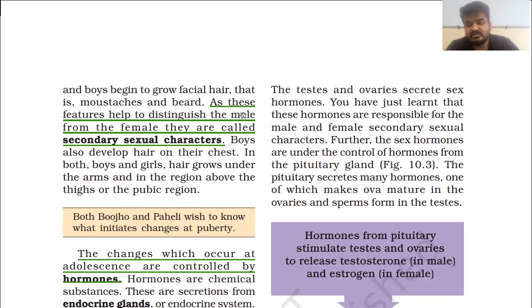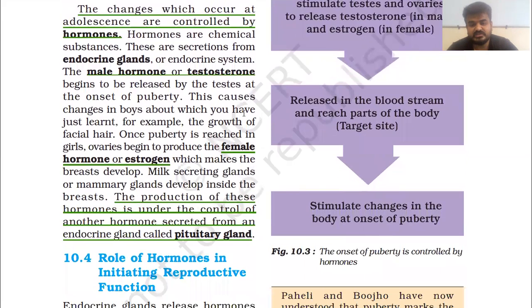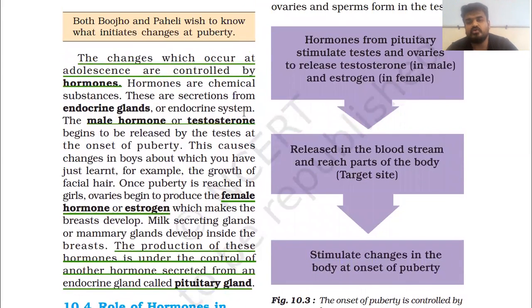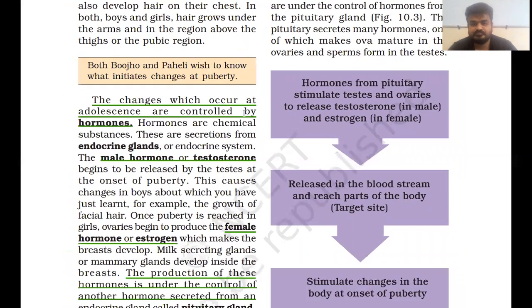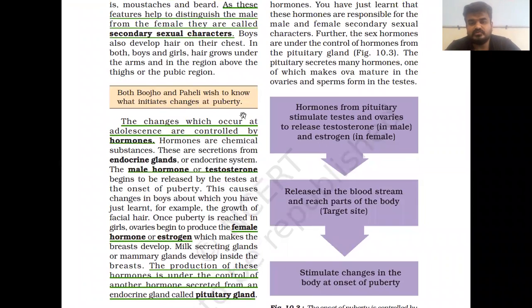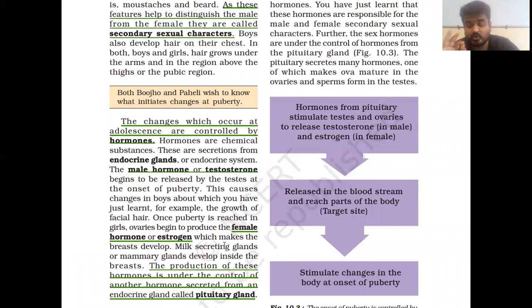The sex hormones are under the control of hormones from the pituitary gland, as shown in Figure 10.3. This flow is given there — hormones from the pituitary stimulate the testes and ovaries to release sex hormones. Testosterone is the male hormone and estrogen is the female hormone. Please don't forget this.